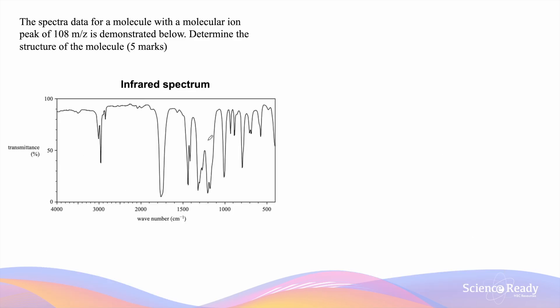So the first spectrum that's provided to us is the infrared spectra. Looking at the infrared spectrum, the first thing that we recognize is that there is a peak at 1680, which helps to distinguish that there is a presence of a carbonyl carbon.